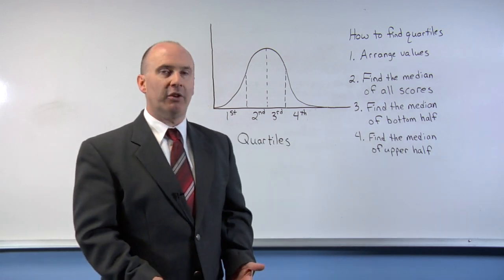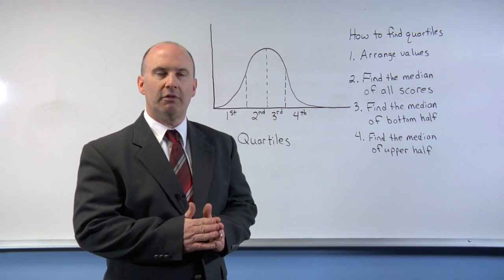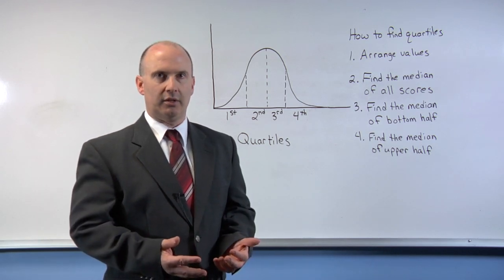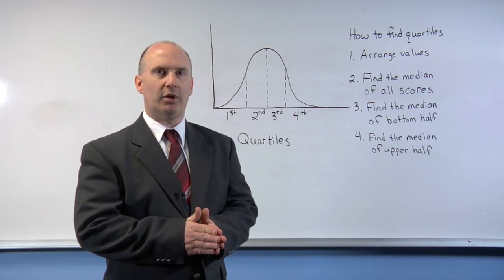Remember, if you have an odd number of values in your data, the median is going to be your middle value. If you have an even number of values, then you're going to take the two middle values and find the average of those two.